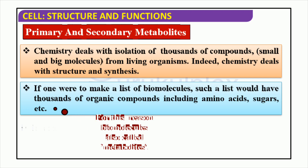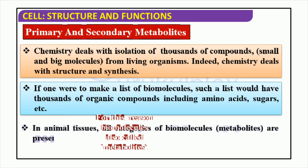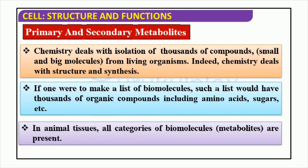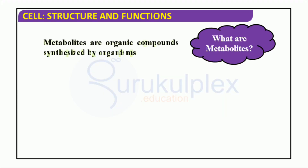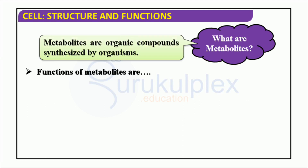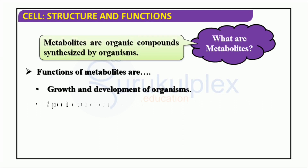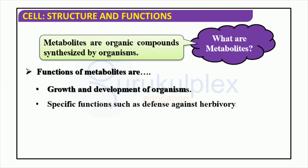Primary metabolites are critical to the survival of living organisms and take part in metabolism, while secondary metabolites exist in nature but are non-essential for life. Organic compounds known as metabolites are vital to the functioning of organisms, playing a role in the growth and development of organisms, and acting as a defense mechanism against herbivores.